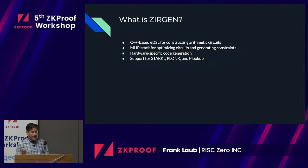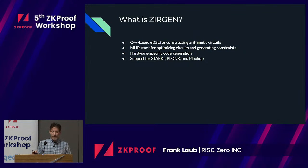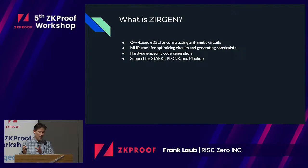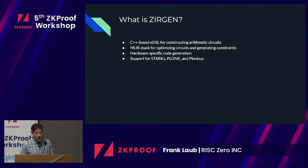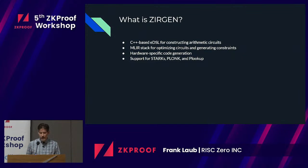So what is Zergen? It's currently a C++-based EDSL used for constructing arithmetic circuits. We have an MLIR stack which allows us to specify what the IR should look like and what kinds of passes you can do on that IR to optimize it. We have hardware-specific code generation. Currently we support STARKs; we use the Plonk argument — not Plonk arithmetization, but just the permutation argument — and we use a little bit of Plonk to do range checks and things like that.